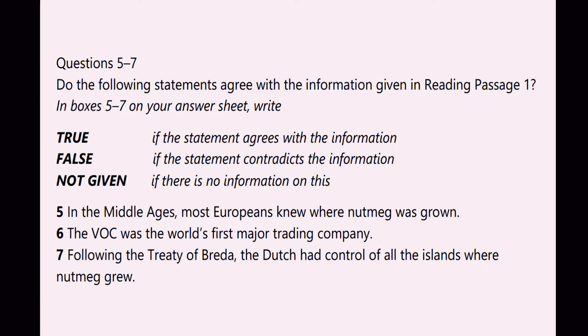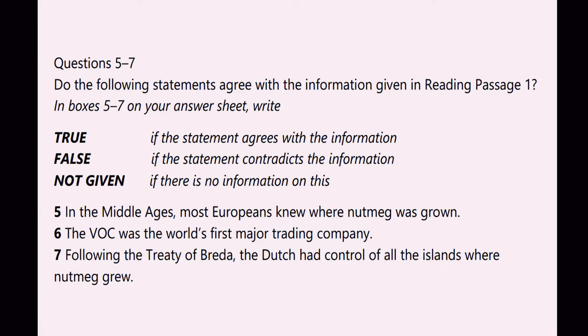Alright, let's begin. Please bear in mind that the questions are in order and we want to take advantage of this. Instead of finding a keyword only for question 5, we select keywords for all the questions. I will choose 'Middle Ages', 'VOC', and 'Treaty of Breda'. These are amazing keywords because these words cannot be changed in the passage and we should be looking for exactly the same things. Now we need to scan for the keywords — VOC is the easiest to find because it only takes a second. Pause the video and go find the keywords in the passage if you'd like to.